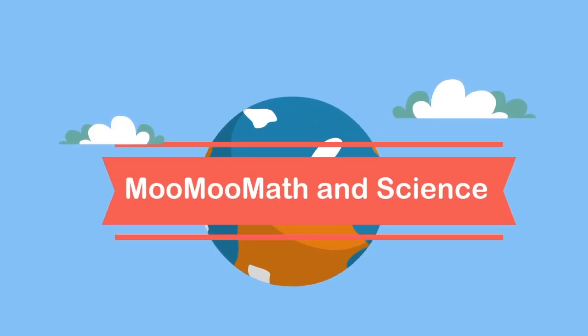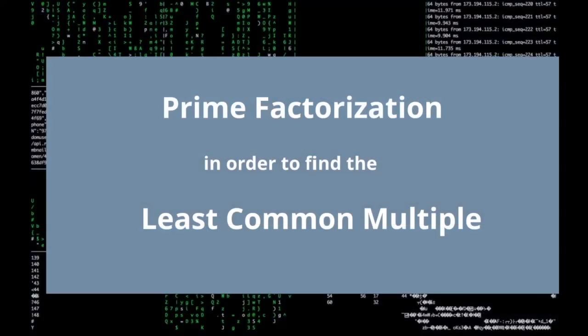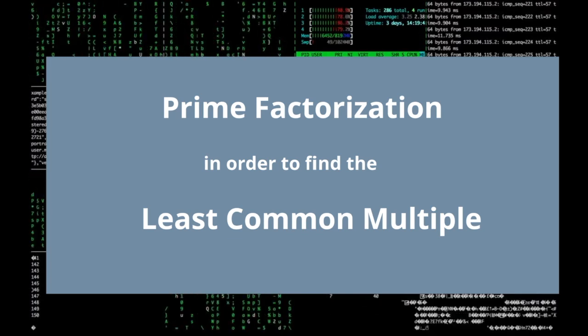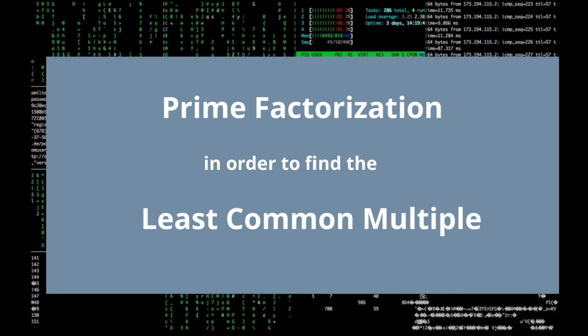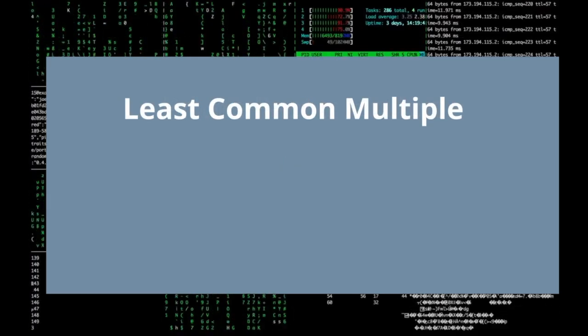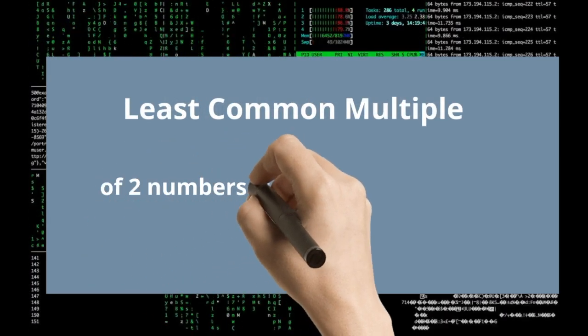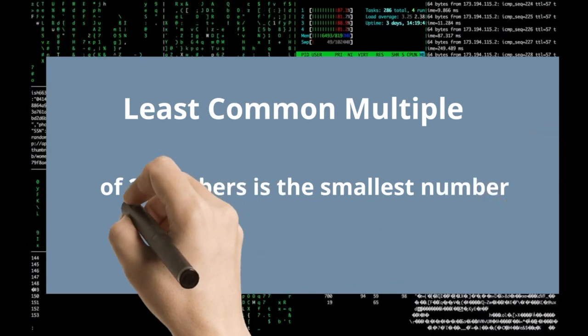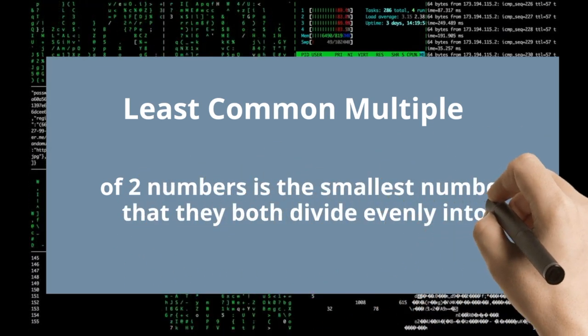Welcome to Moo Moo Math and Science. In this video, let's learn how to use prime factorization in order to find the least common multiple or LCM. The LCM of two numbers is the smallest number that they both divide evenly into. So let's get started.